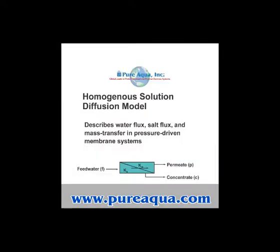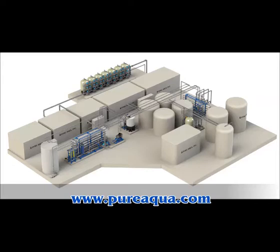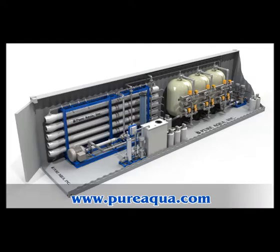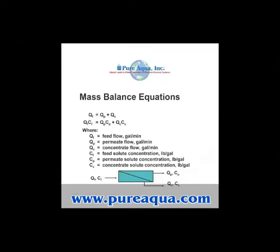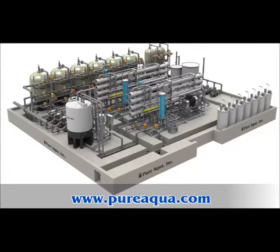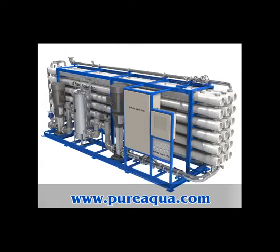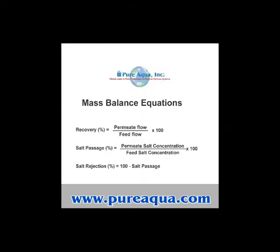The early membranes could be used to desalt most well and tap water, however, and the process began to rival the previously available deionization processes. By the 1980s, genuine seawater reverse osmosis membranes and systems were available commercially.